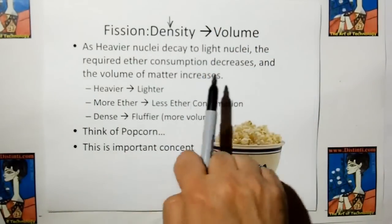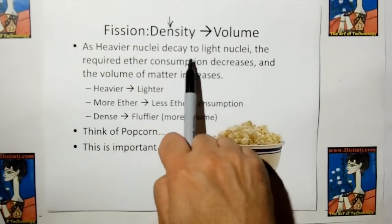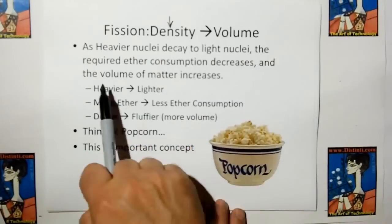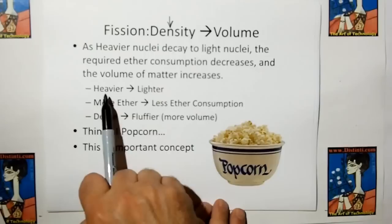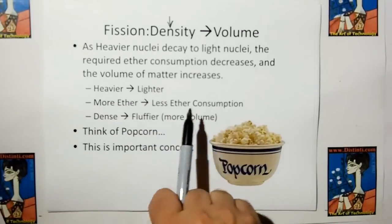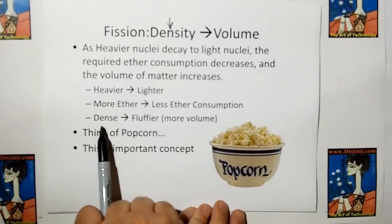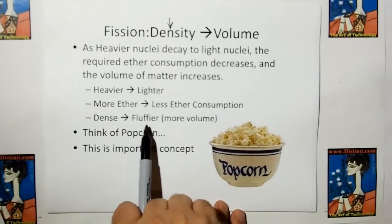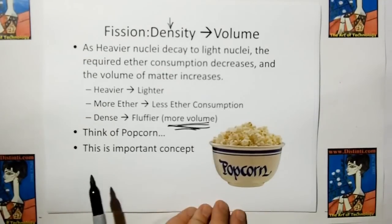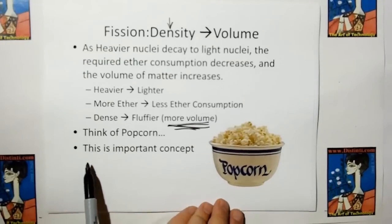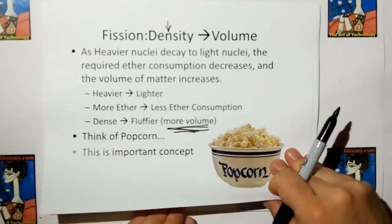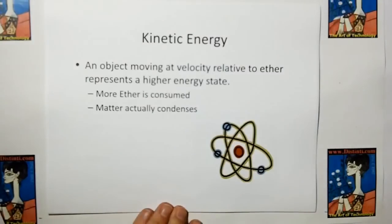As heavier nuclei decay into lighter nuclei, the required ether consumption decreases and the volume of the matter increases. We go from heavier elements to lighter elements — more ether consumption to less ether consumption, from denser material to a fluffier, higher-volume material. This is an important concept we're going to need when we discuss Distinti's universe and how stars generate energy.